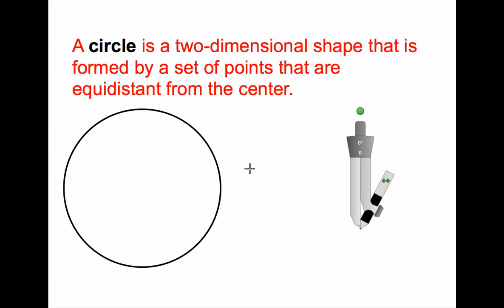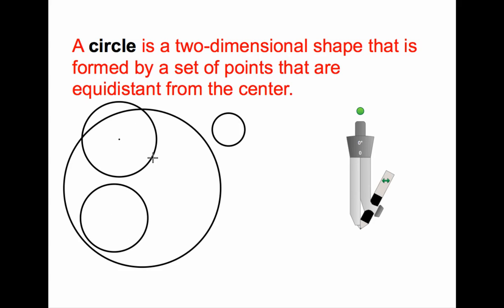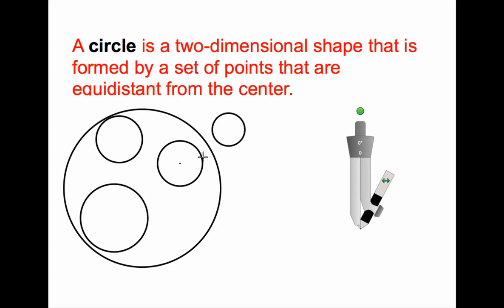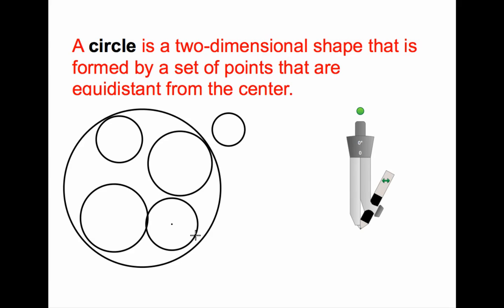So that's a circle. Let's draw one more circle — a smaller circle this time. Let's draw a circle within this circle, and a circle right there, a little smaller. We just played around there and we saw that circles are literally a set of points that are the same distance, equidistant, from the center. Here's the center, and all of these points along here are the same distance from the center. That's what a circle is.